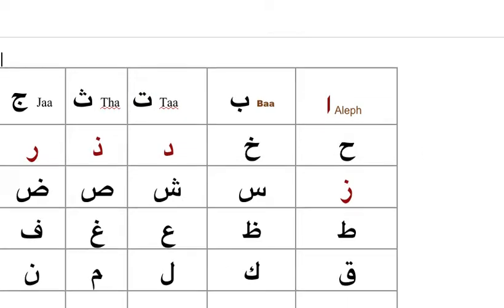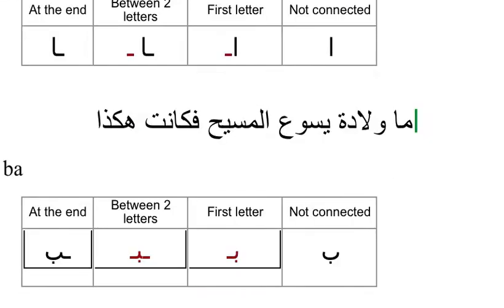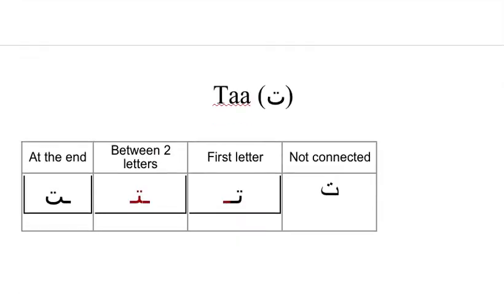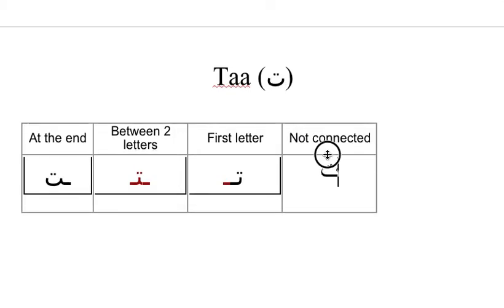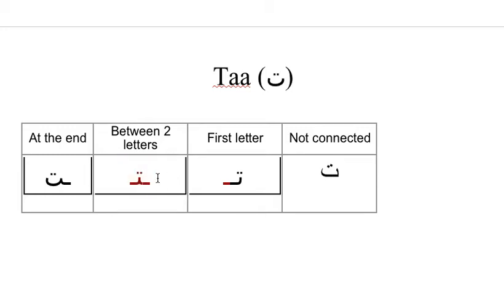TA is a letter which can be connected from two sides — you can review my previous videos to refresh your memory. This is how it looks by itself, independent, not connected. This is how it is as a first letter. This is how it is as a second letter, meaning something is going to be before and after it. And this is how it is going to be at the end.